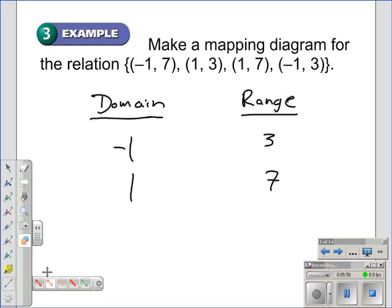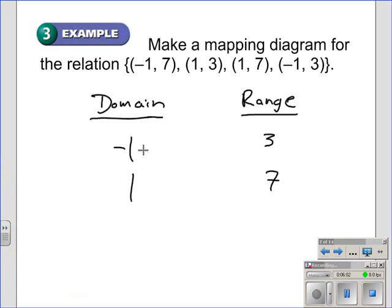The different range values would be three and seven. Then we use arrows to connect the corresponding values.